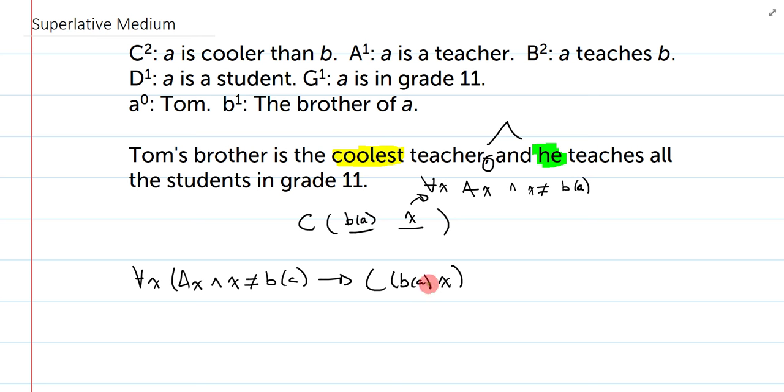So, I'm going to say, for all x, bracket Ax, and x doesn't equal B of A, then Tom's brother is cooler than x. Okay. Now, in this case, x is all other teachers. Now, I'm able to say, and he teaches all the students in grade 11. Now, this is just an additional property, and when I'm doing additional properties, I can actually just put a big and here, and then write all my additional properties here. Let's do that.